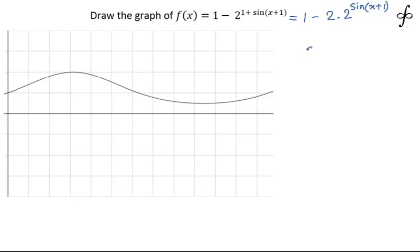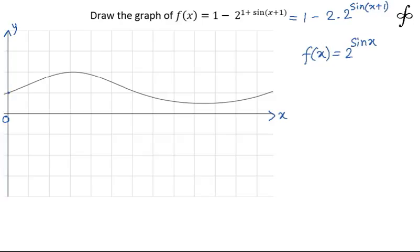I have started with the graph of f(x) = 2^(sin x). This is the graph from where we begin. On the left-hand side, you can see the graph — the x-axis, the y-axis, and the origin. For f(x) = 2^(sin x), putting x = 0 gives 2^0, which is 1.